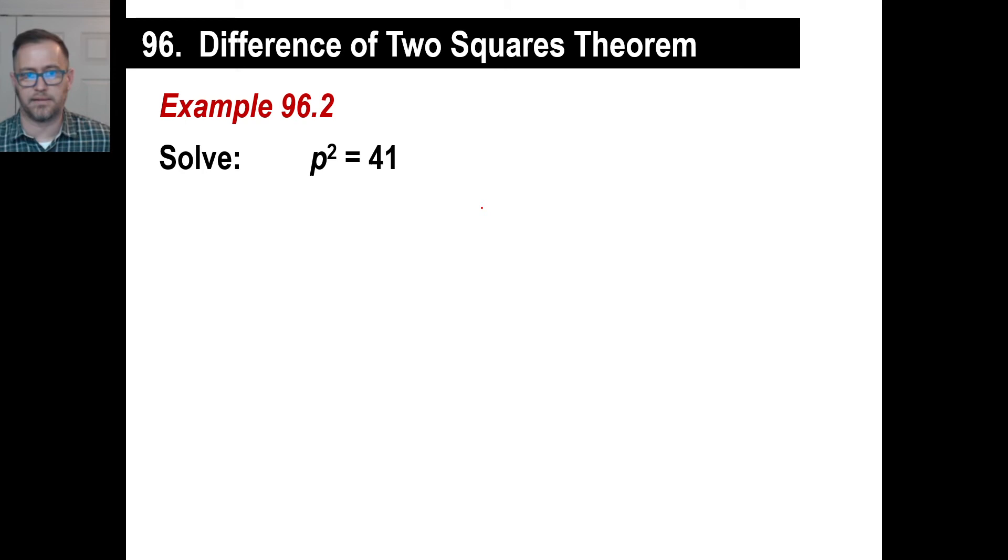So let's take that and go to something like this. If p squared is equal to 41, what the heck is the square root of 41? There is no integer answer, right? So you're just going to have to go, I'm going to need to take the square root of both sides. The square root of p squared is p, the square root of 41, but you just leave it. There's nothing you can do with that, but you do need to put the answer is plus or minus the square root of 41.